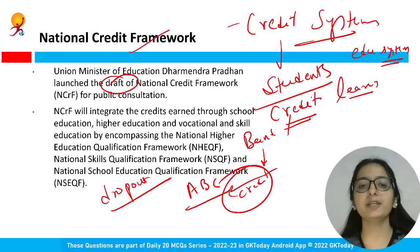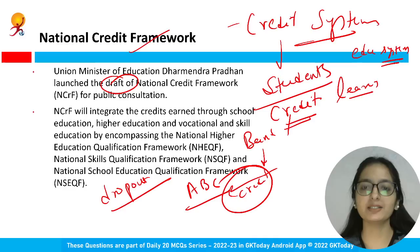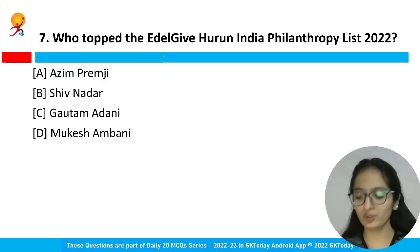The National Credit Framework will integrate credits across school education, higher education, and vocational and skill education — bringing all under one umbrella and ensuring flexibility. Students' learning in all these areas will be credited. That's what the draft says so far.